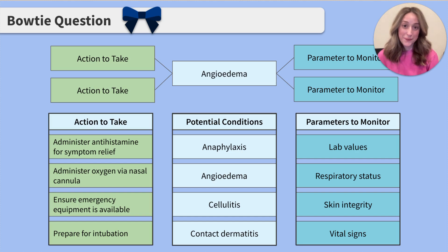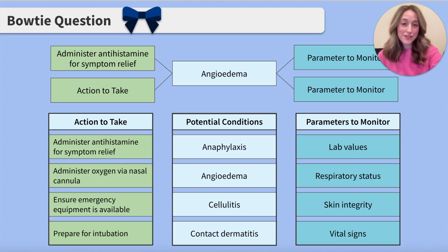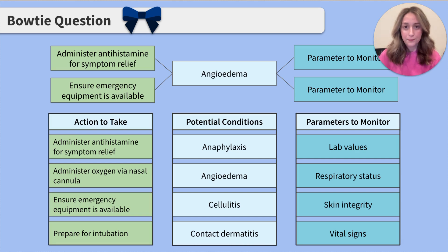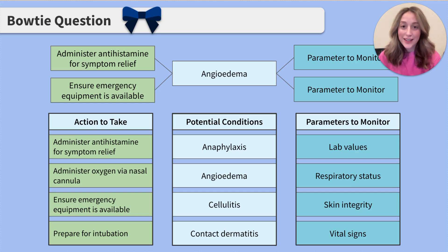Let's move on to actions to take. When thinking about this client, the highest priority actions to take are administer antihistamines for symptom relief and ensure emergency equipment is available. The antihistamine will aid in symptom relief, and emergency equipment should be available given the risk of the condition worsening. Administering oxygen via nasal cannula and preparing for intubation are not indicated at this time. While providing education is a great intervention for any client, it is not the priority intervention.